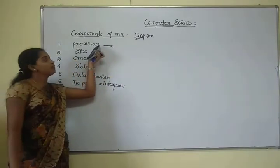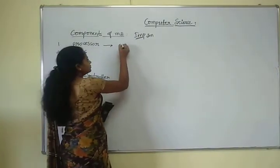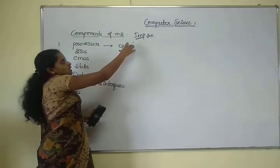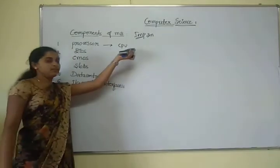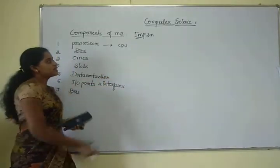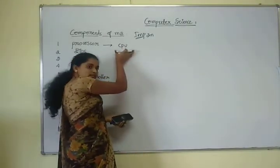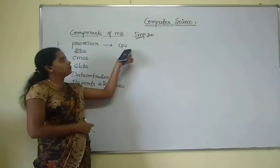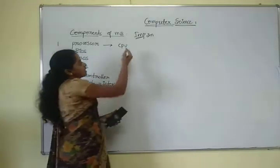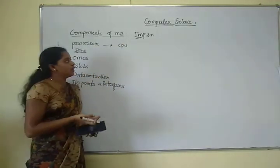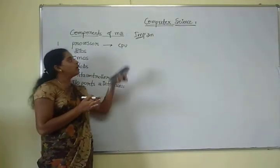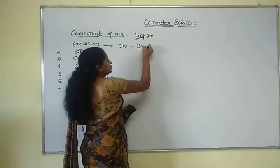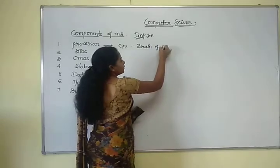This processor is also called as CPU. The CPU is the main component of our computer system. This CPU controls and coordinates all the operations of our computer system. Hence it is called the brain of the computer.